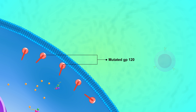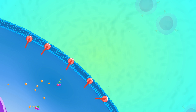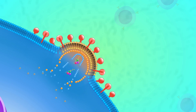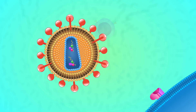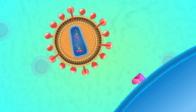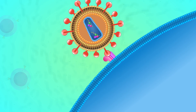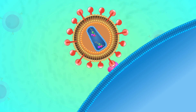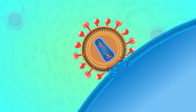The altered GP120 protein changes its co-receptor allegiance and now binds to a different co-receptor, CXCR4, which is found on the surface of CD4+ T cells. The same processes occur within the T cells, resulting in new virus particles.